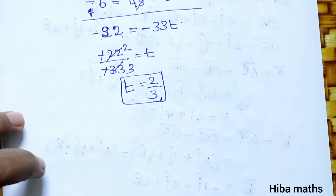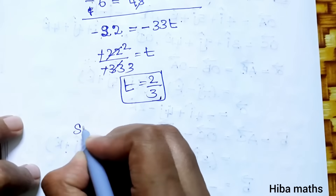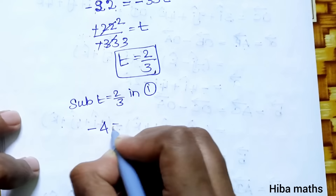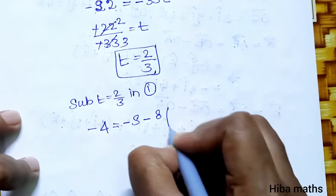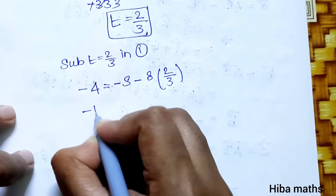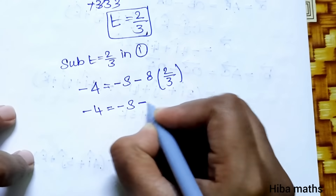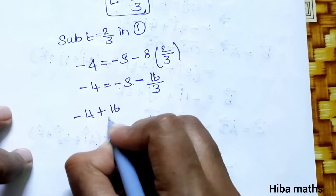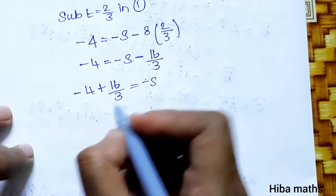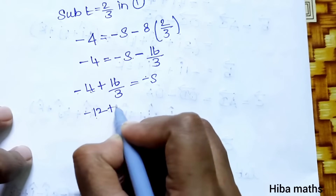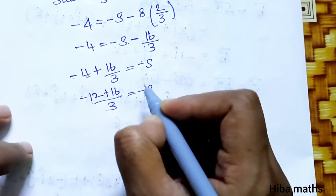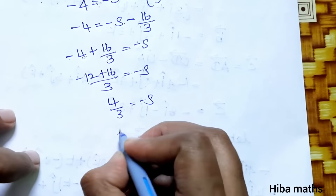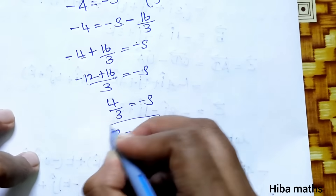Now substitute t = 2/3 into equation 1 to find s. Equation 1: -4 = -s - 8(2/3) = -s - 16/3. So -4 + 16/3 = -s, giving (-12 + 16)/3 = -s, so 4/3 = -s, therefore s = -4/3.